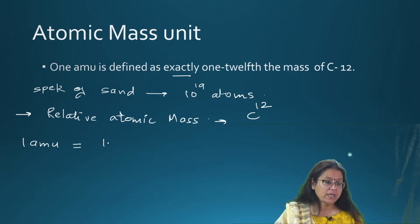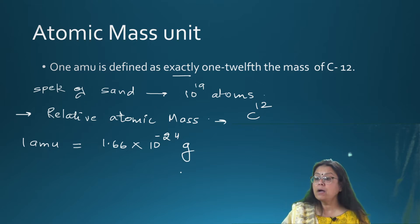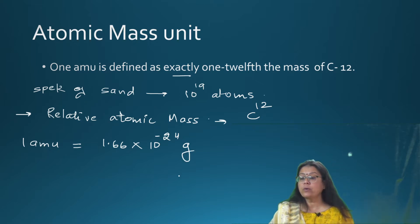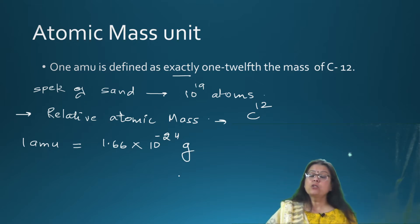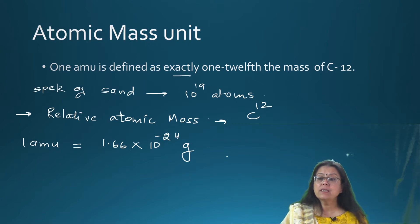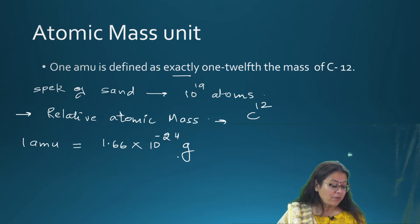The value of one AMU is equal to 1.66 into 10 raised to power minus 24 grams. This is a classic MCQ fact: one AMU equals 1.66 × 10⁻²⁴ grams.